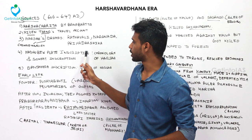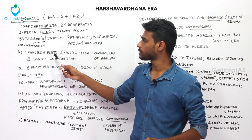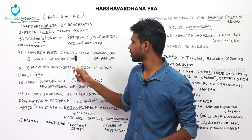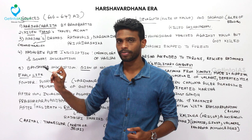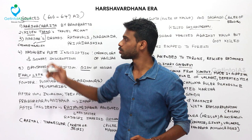Moving to epigraphical or inscriptional sources, these include the Madhuban plate inscription and Sonpat inscription, which together give the chronology of Harsha. The Banskhera inscription has Harsha's signature engraved on it. His chronology was determined by the Madhuban plate and Sonpat inscriptions. So these are the literary as well as epigraphical sources.